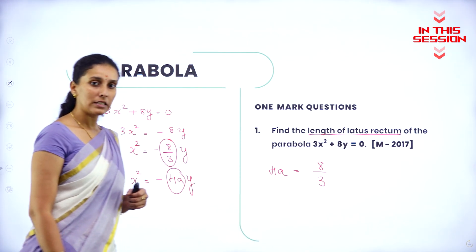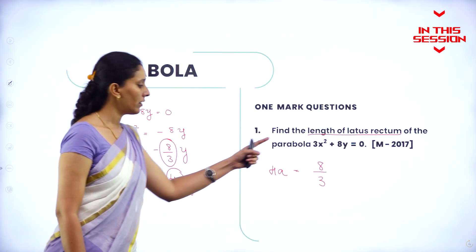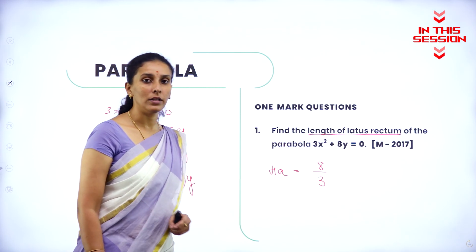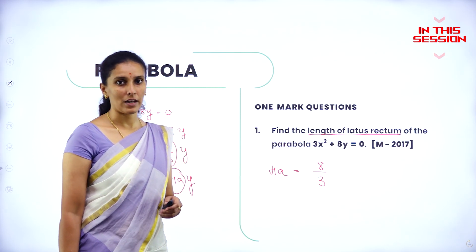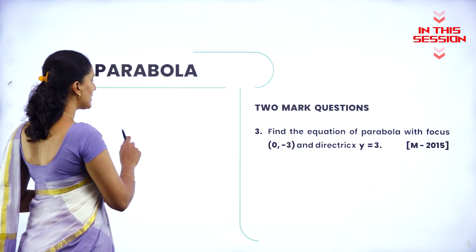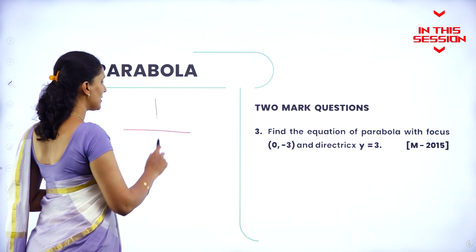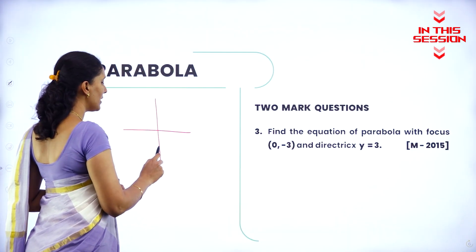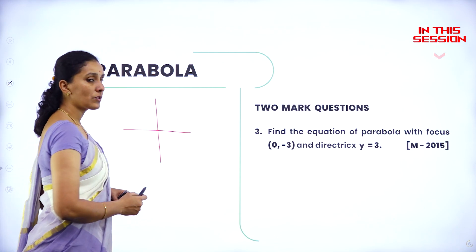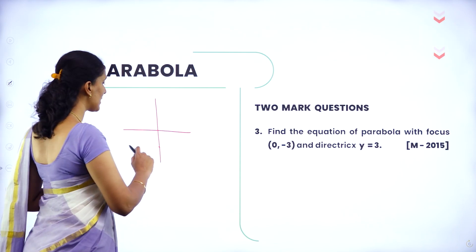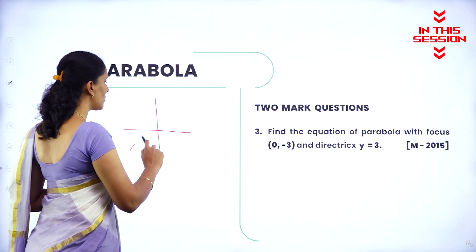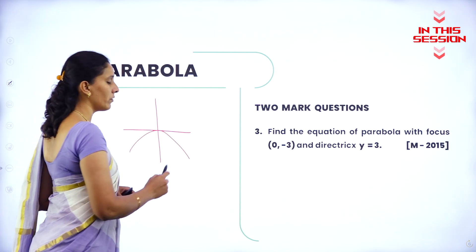Since it is the distance, we are taking only the positive part. When I say (0, minus 3), obviously your focus will be on the negative side of x-axis. Hence, it will be a downward parabola.